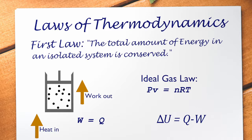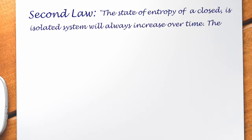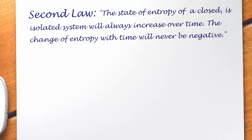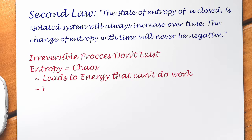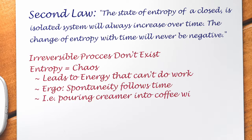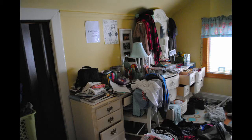The second law states that the entropy of the entire universe as an isolated system will always increase over time. The changes in entropy in the universe can never be negative. So entropy, or disorder, is asymmetric to time, meaning that an isolated system will become more disordered as time increases — similar to the cleanliness of a teenager's bedroom.